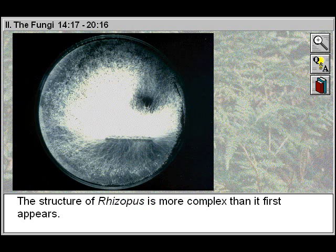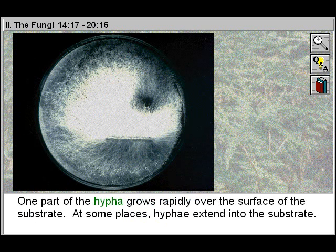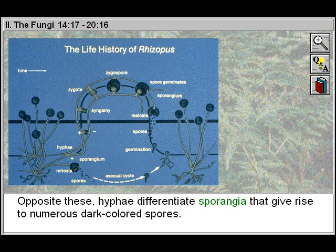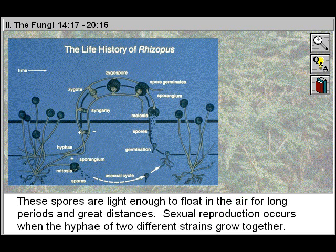The structure of Rhizopus is more complex than it first appears. One part of the hyphae grows rapidly over the surface of the substrate. At some places, hyphae extend into the substrate. Opposite these, hyphae differentiate sporangia that give rise to numerous dark-colored spores. These spores are light enough to float in the air for long periods and great distances.